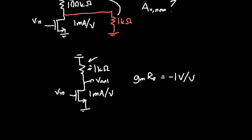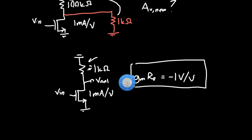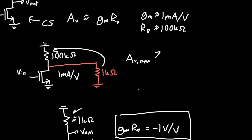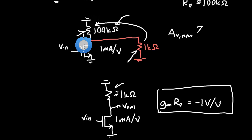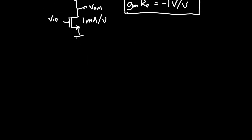That's a big problem. I designed the common source amplifier to have a gain of negative 100, but now with the load resistor attached it has a gain of negative 1. The load resistor is acting in parallel with the drain resistance and killing the gain. If I gave this to my boss I'd probably get fired. The fundamental issue becomes clear when we draw the circuit model of the amplifier as a voltage source - our original gain was negative 100 with a 100 kilohm drain resistor.